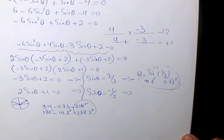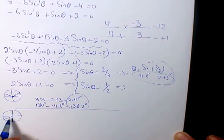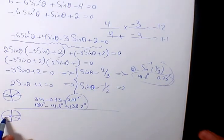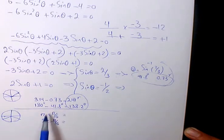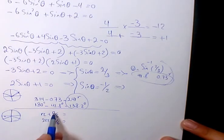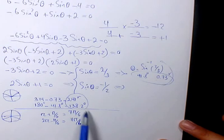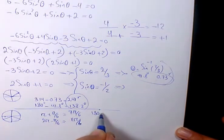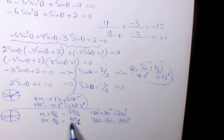Now let's solve for the second part: sine theta equals negative one half. Since sine is negative in quadrants 3 and 4, and we know sine of pi over 6 is positive 1 over 2, the answers must be pi plus pi over 6 and 2 pi minus pi over 6. That gives 7 pi over 6 and 11 pi over 6. In degrees, that's 180 plus 30 equals 210 degrees, and 360 minus 30 equals 330 degrees.